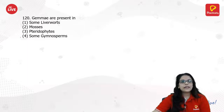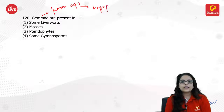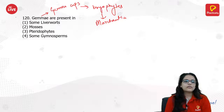Gemmae cups are basically present in bryophytes such as Marchantia and other liverworts.